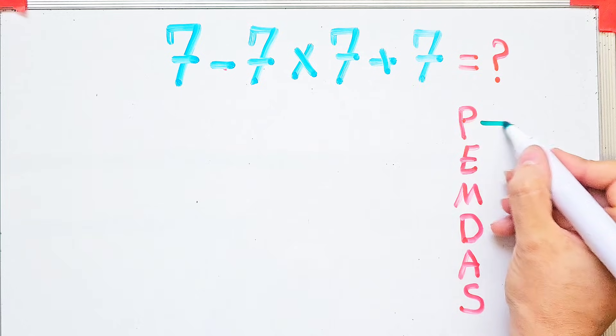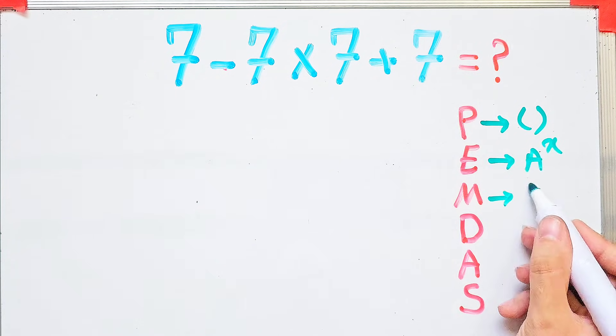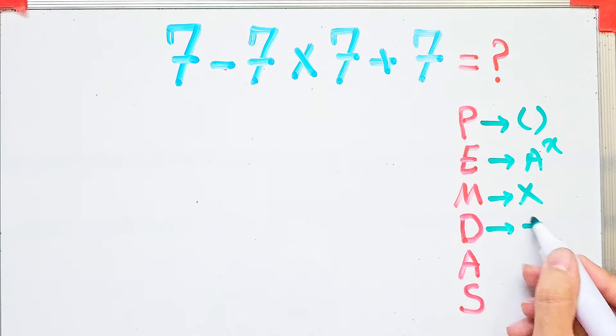In this rule, P stands for parentheses, E stands for exponents, M stands for multiplication, D stands for division, A stands for addition, and S stands for subtraction.